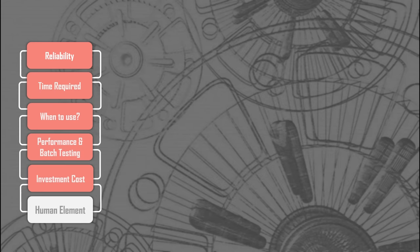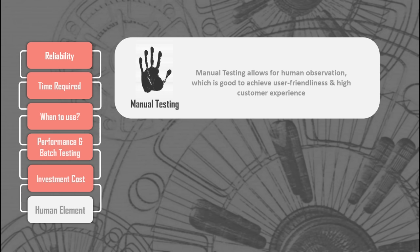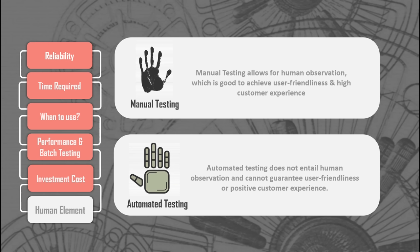The last criteria is the human element. Manual testing allows human observation, giving you the exact kind of feedback a person would provide — and that can be invaluable. Being able to predict what users will or won't like can influence your design and improve the customer experience. With automated testing, since there is no human observation involved, there is no guarantee of a positive customer experience. So when it comes to the human element, manual testing is much better.